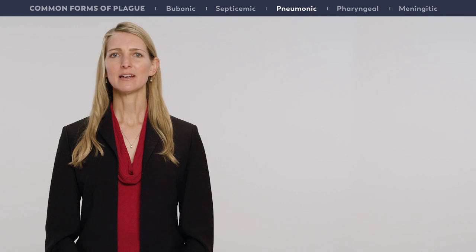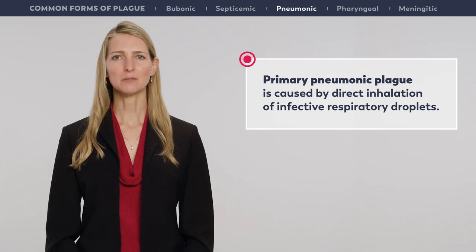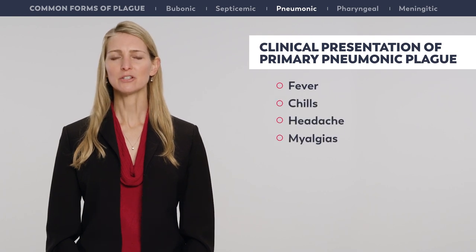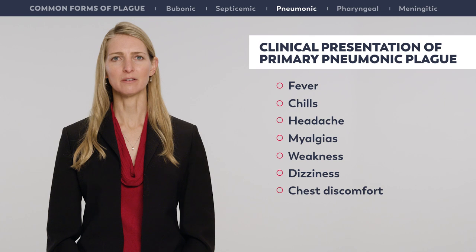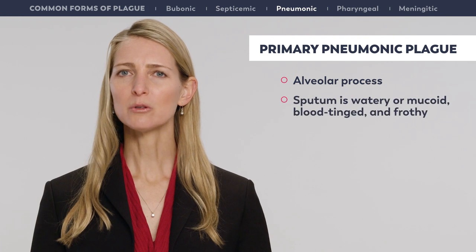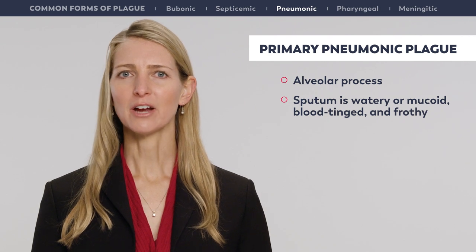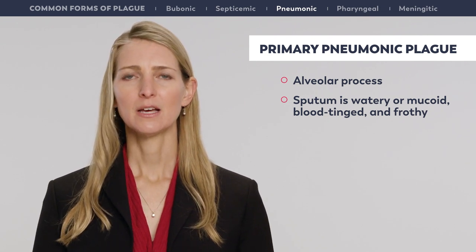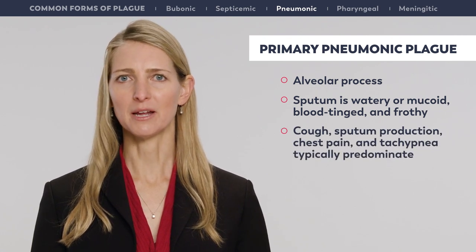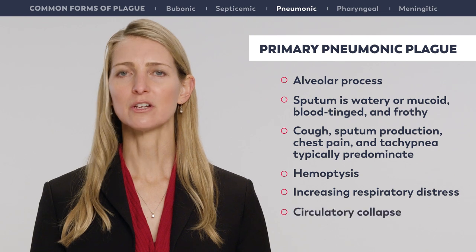Pneumonic plague is divided into primary and secondary disease. Primary pneumonic plague is caused by direct inhalation of infective respiratory droplets. The onset is often sudden, with fever, chills, headache, myalgias, weakness, dizziness, and chest discomfort. Primary pneumonic plague is principally an alveolar process and the sputum is most often watery or mucoid, blood-tinged, and frothy. Sputum may become frankly bloody in untreated patients. As illness progresses, cough, sputum production, chest pain, and tachypnea typically predominate. These may be accompanied by hemoptysis, increasing respiratory distress, and circulatory collapse.